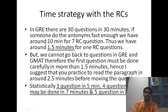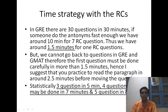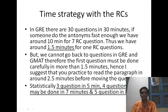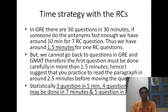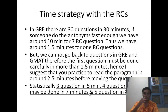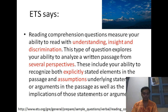The GRE has a 30-minute verbal section, and you need to allocate about 1.5 minutes for each RC passage. That's the strategy. Similarly for the GMAT, it's around 1.5 to 2.5 minutes. Statistically, aim for three questions in five minutes, and a four-question RC in seven minutes. This includes both the reading and the questions. You can study these time strategies on your own as well.